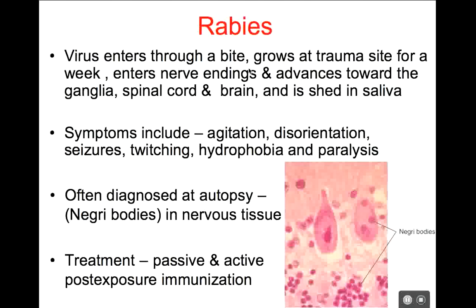Because we're talking about damage to the nervous system, symptoms include agitation, disorientation, seizures, twitching, paralysis, and other things associated with central nervous system damage. Sometimes you see other effects like fever, vomiting, or headache, but the main ones would be anything dealing with the central nervous system.